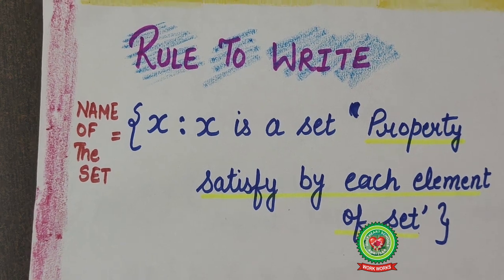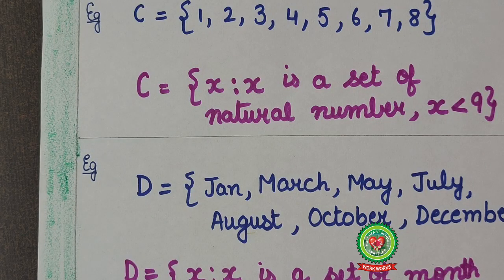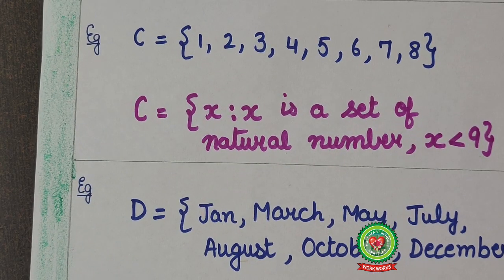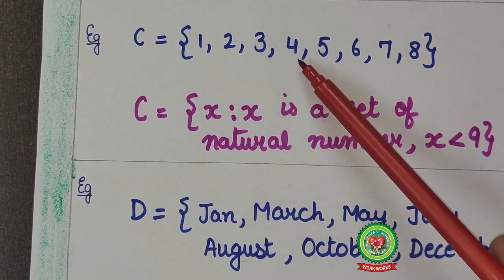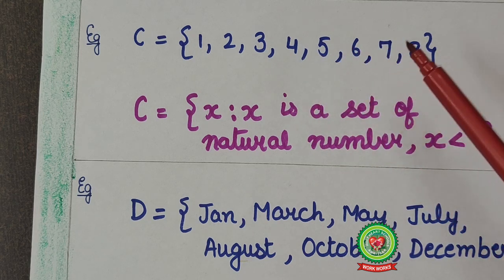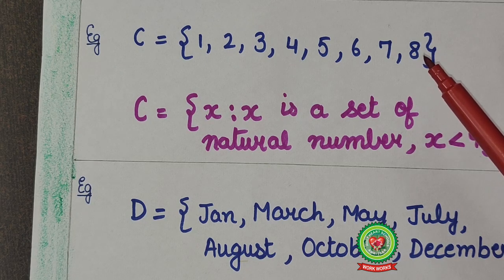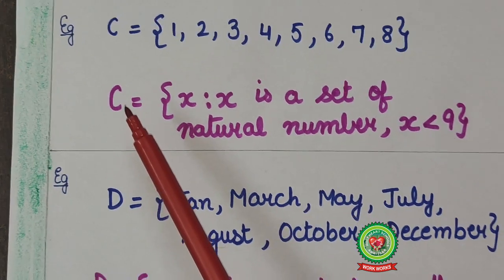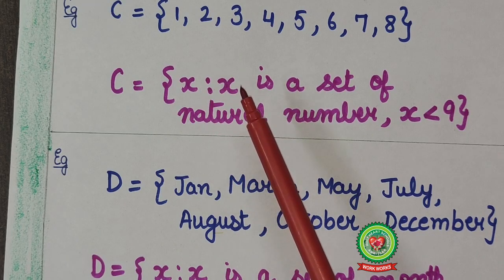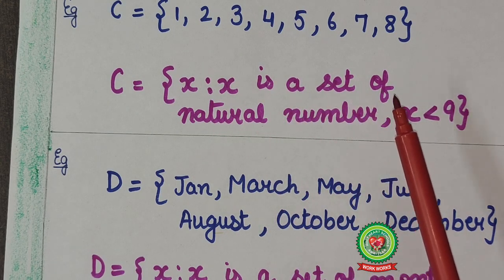Let's understand with more examples. Here C is given, that is 1, 2, 3, 4, 5, 6, 7, 8. It is given in roster form. Now I have to write it in set builder form. Then I will start with capital C. X such that x is a set of. Here what is common?